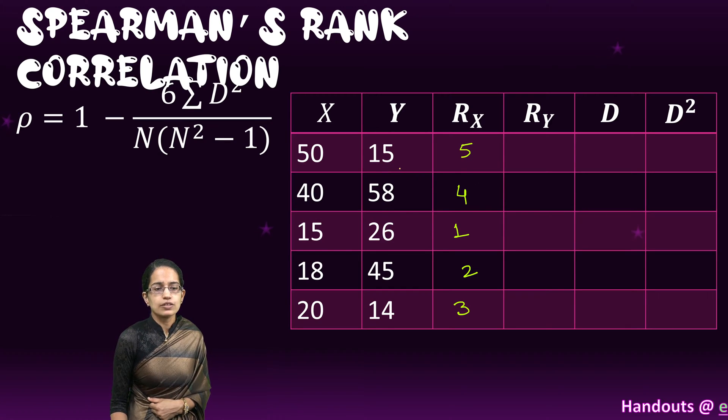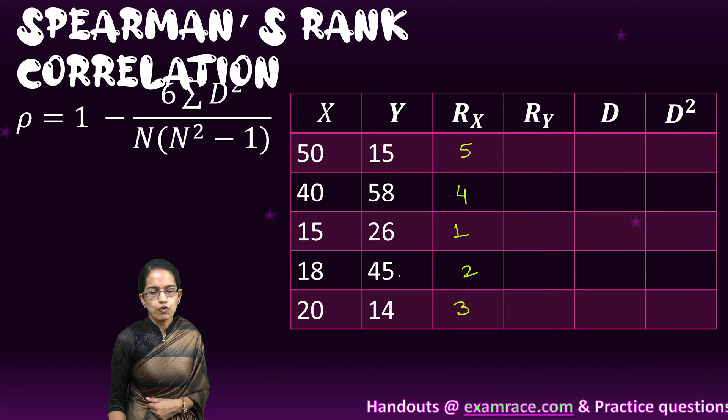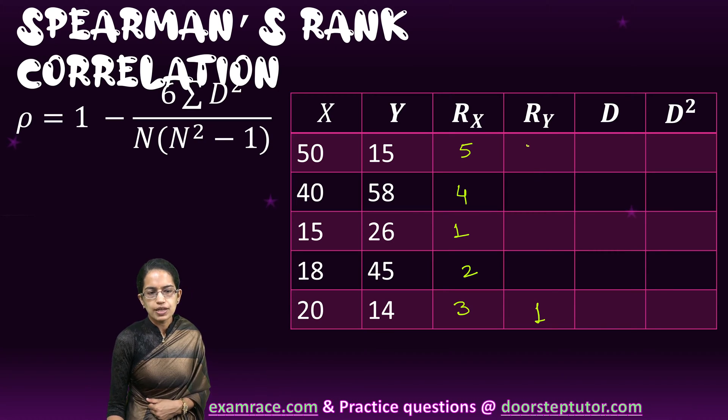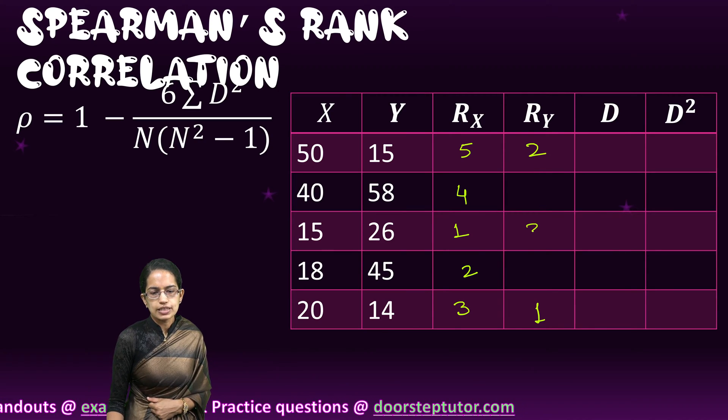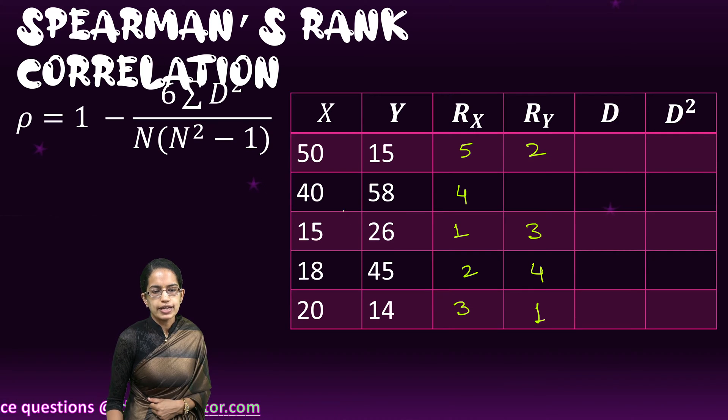The other set of values are 15, 58, 26, 45 and 14. Here, 14 becomes the first rank, 15 becomes the second rank, 26 becomes the third rank, 45 becomes the fourth rank, and 58 becomes the fifth rank.